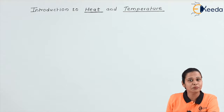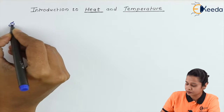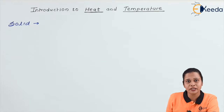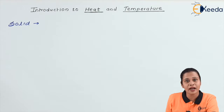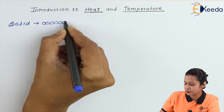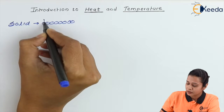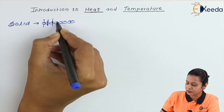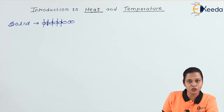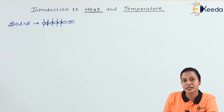Let us take the example of a solid. In the case of solid, atoms are very close to each other and they vibrate from their mean position. Their vibration from their mean position means the energy transfer is because of the vibration. So we can say in a solid there is a vibrational energy.